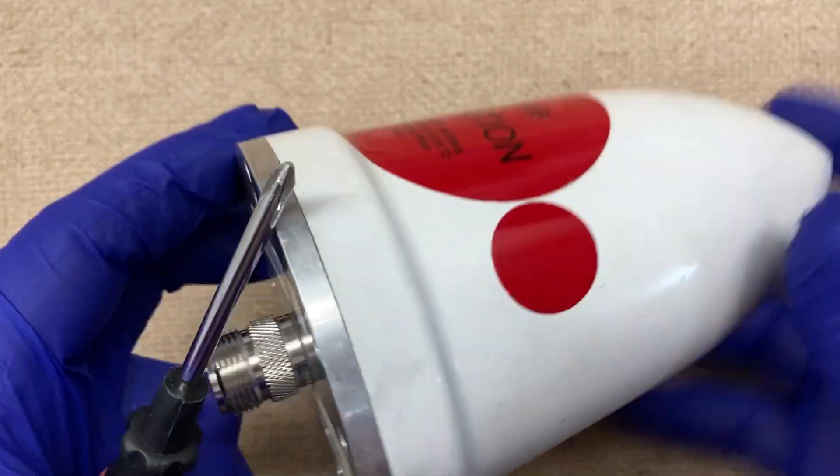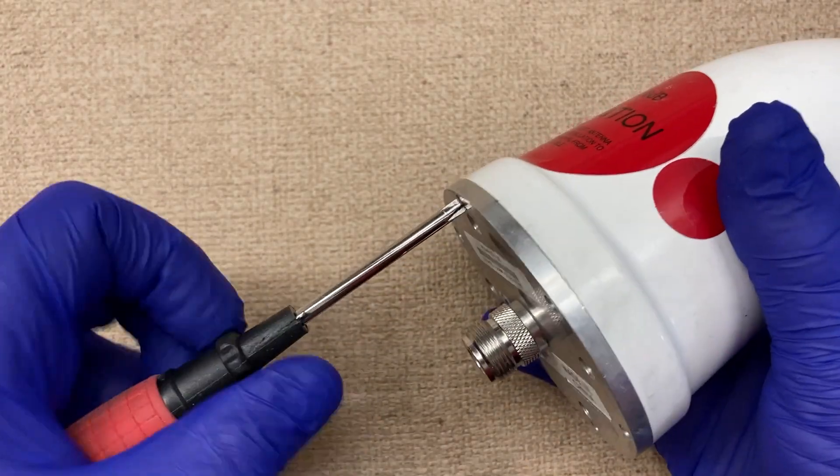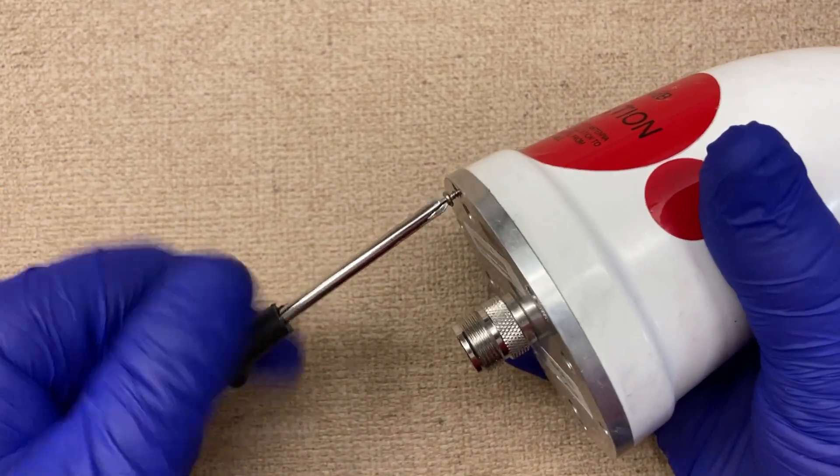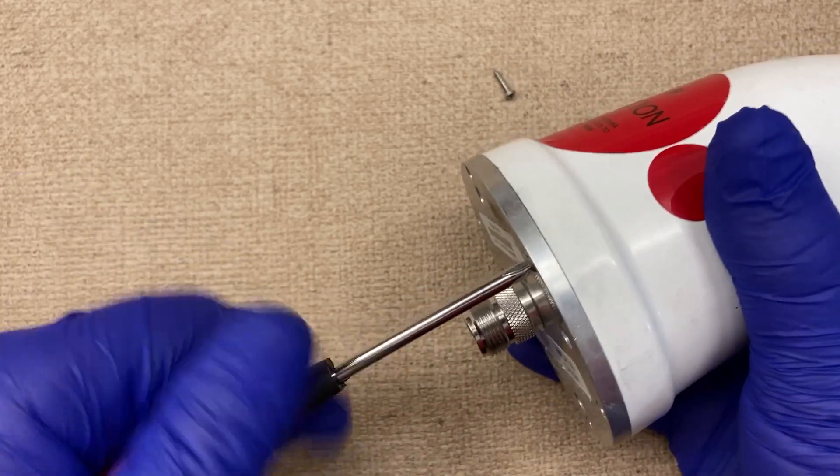We've just got some screws here to take it apart and see what's inside. So if we take these screws out, there should be a little rubber ring in there and some silicon type stuff.